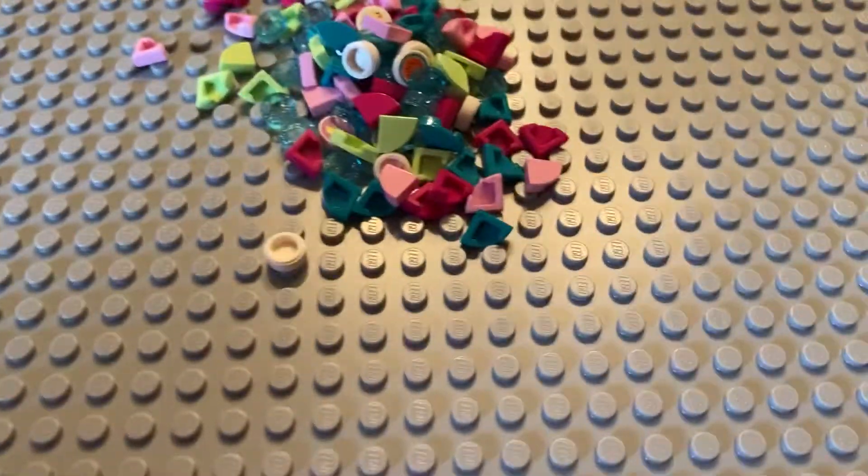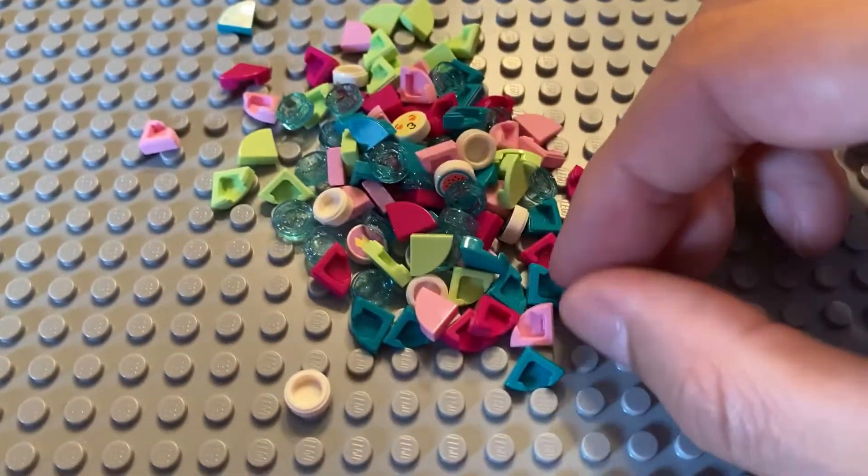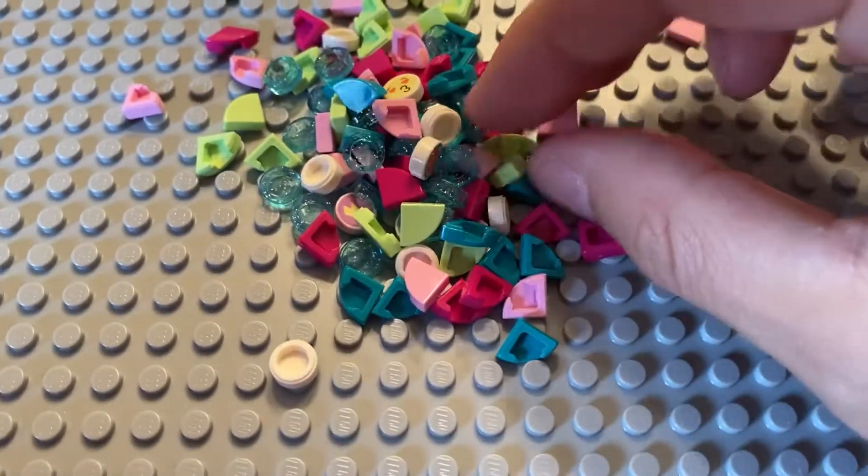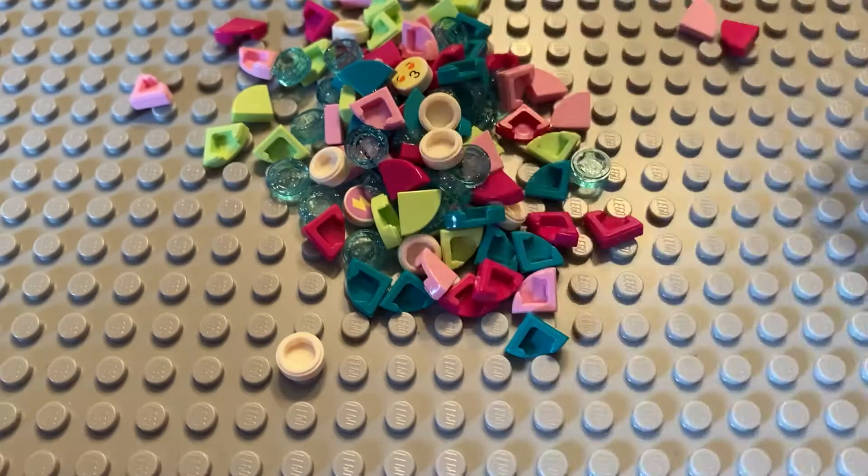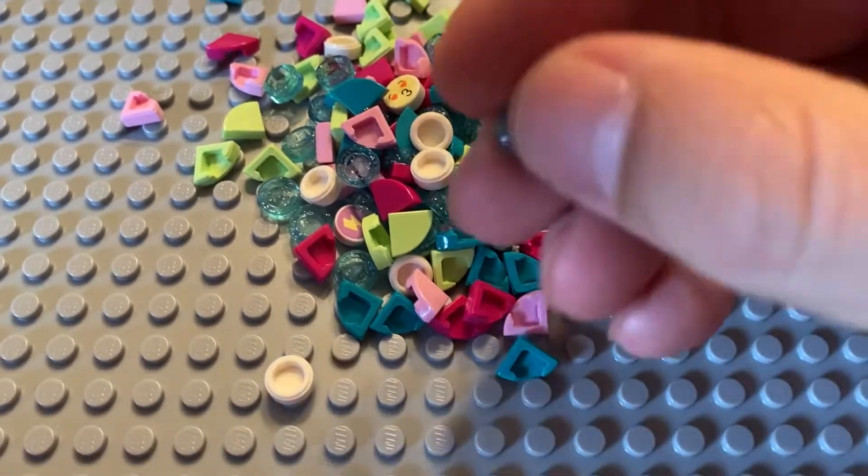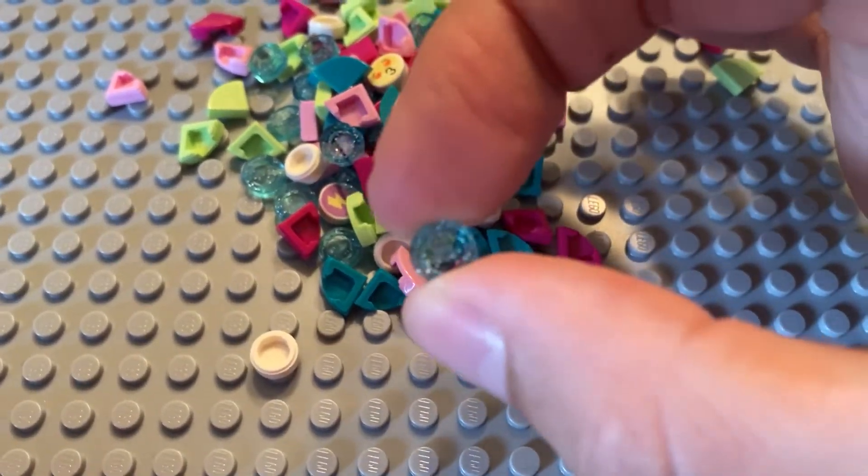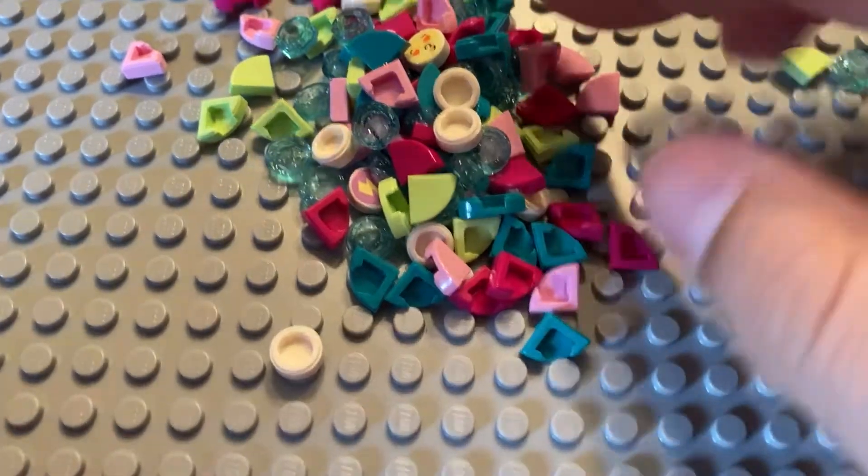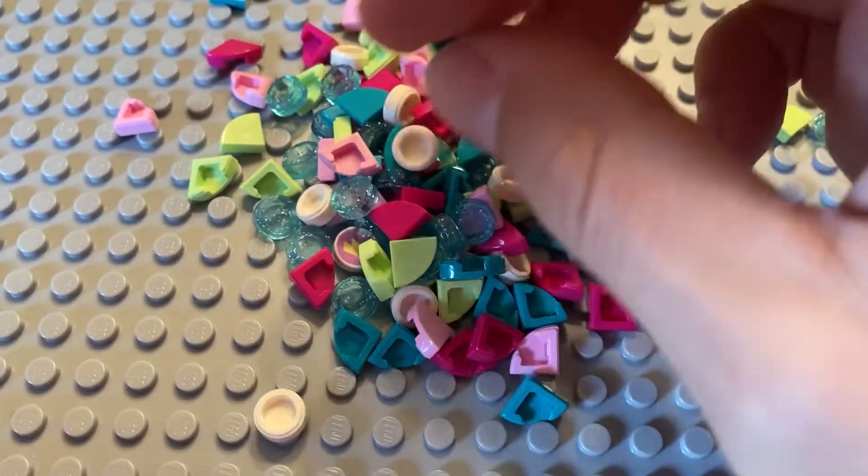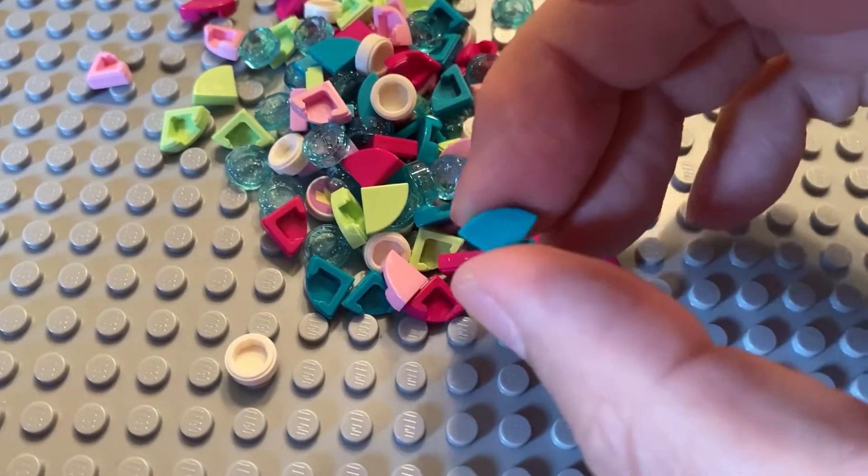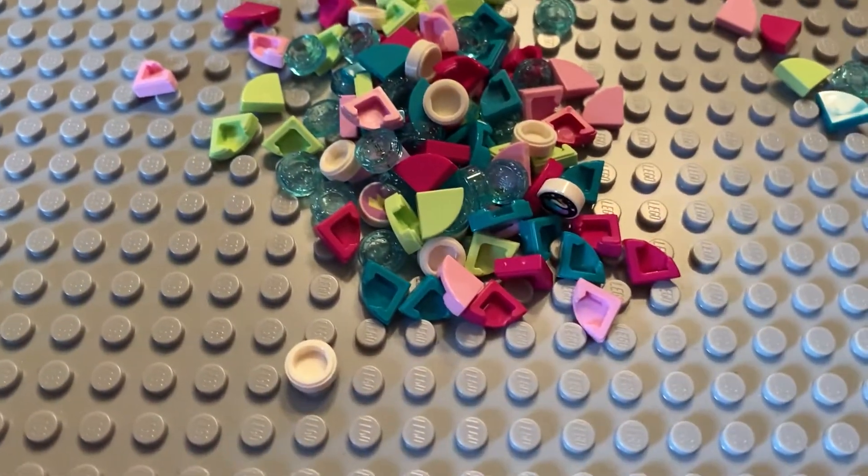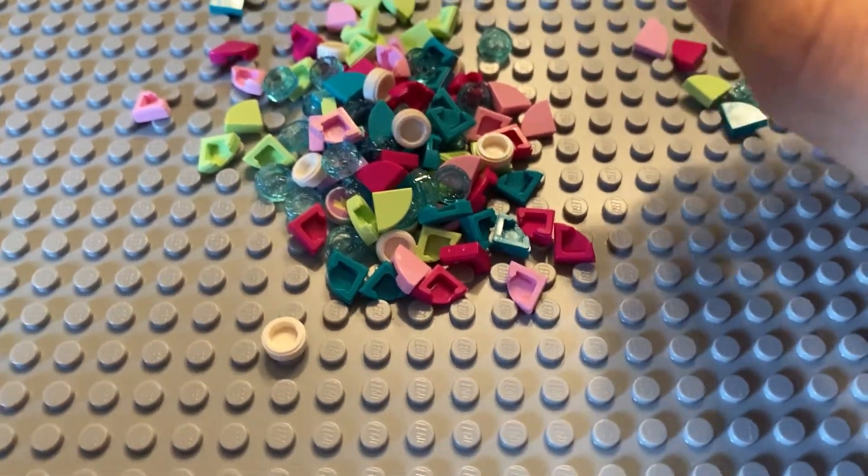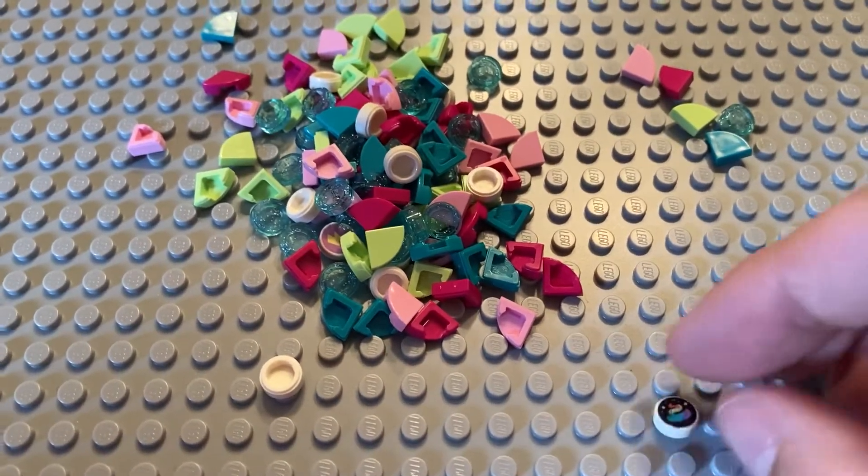Let's see what all we have. So of course we have the quarter round light pink, the quarter round dark pink or magenta, the quarter round lime green, the one by one round trans light blue with the sparkle in there, and then the quarter round dark turquoise or whatever color that is supposed to be. Those are the five main pieces in the pack.